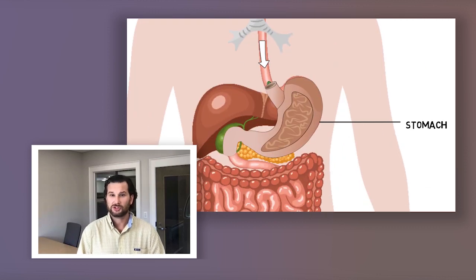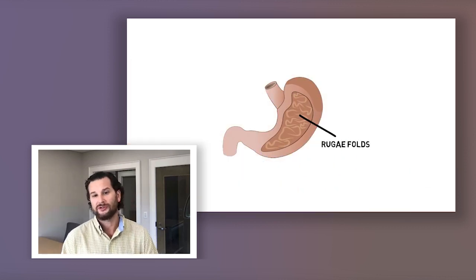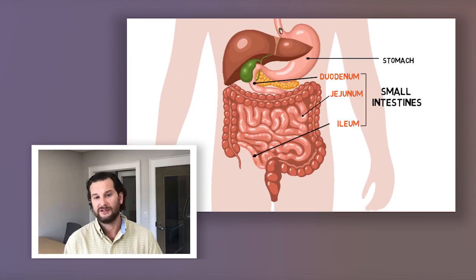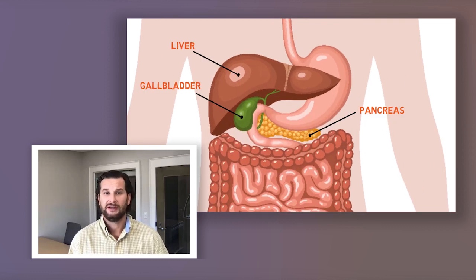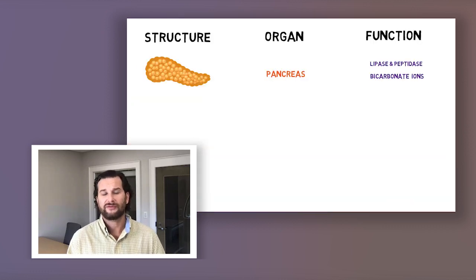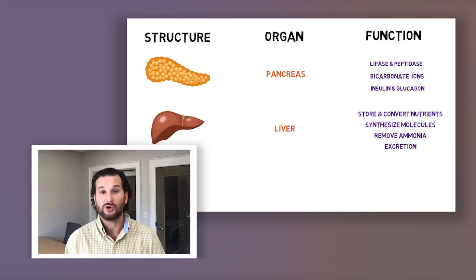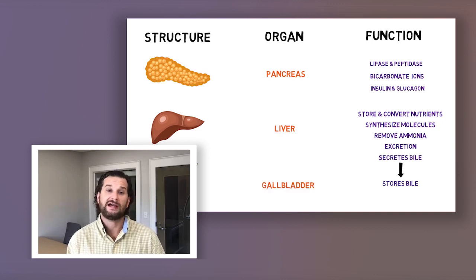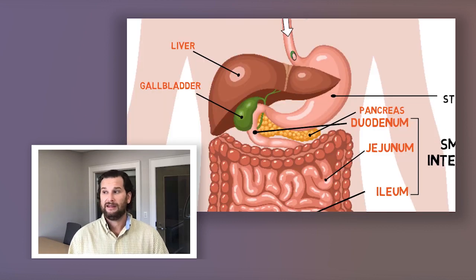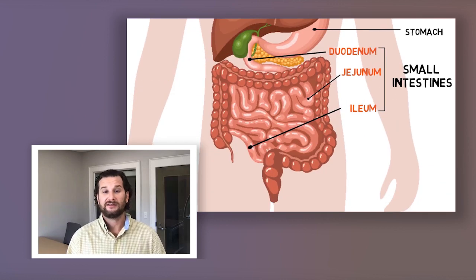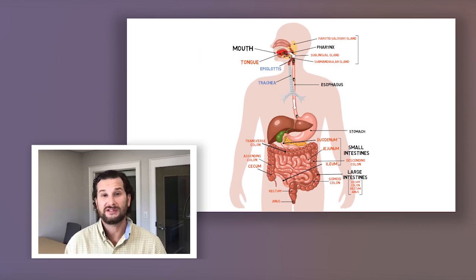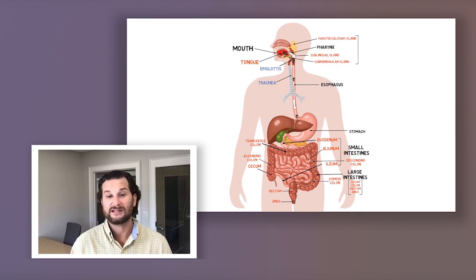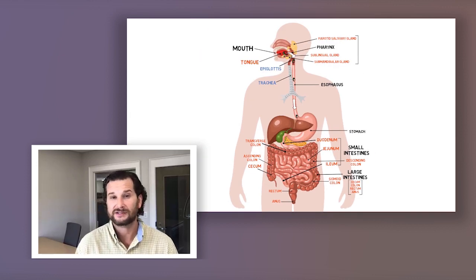Know the disorders of the digestive system. For the stomach: vomiting and ulcers. For the liver: things like cirrhosis and hepatitis. In the intestine: IBS (irritable bowel syndrome), Crohn's disease, colitis, and appendicitis.